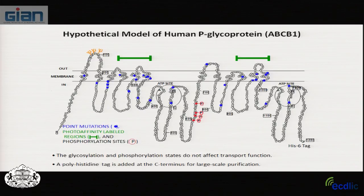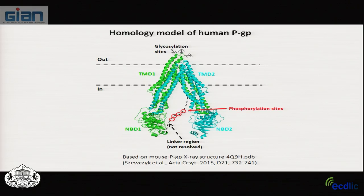P-glycoprotein has a topology of six transmembrane helices, an ATP-binding site, six more transmembrane helices, and a second ATP-binding site. Point mutations throughout the protein can alter substrate specificity — for example, glycine-to-valine at position 185 shifts preference from vinblastine to colchicine. There are four phosphorylation sites in the linker region and glycosylation on extracellular loops, but removing these by mutation does not affect function. A His-tag at the C-terminus is used for purification by affinity chromatography.